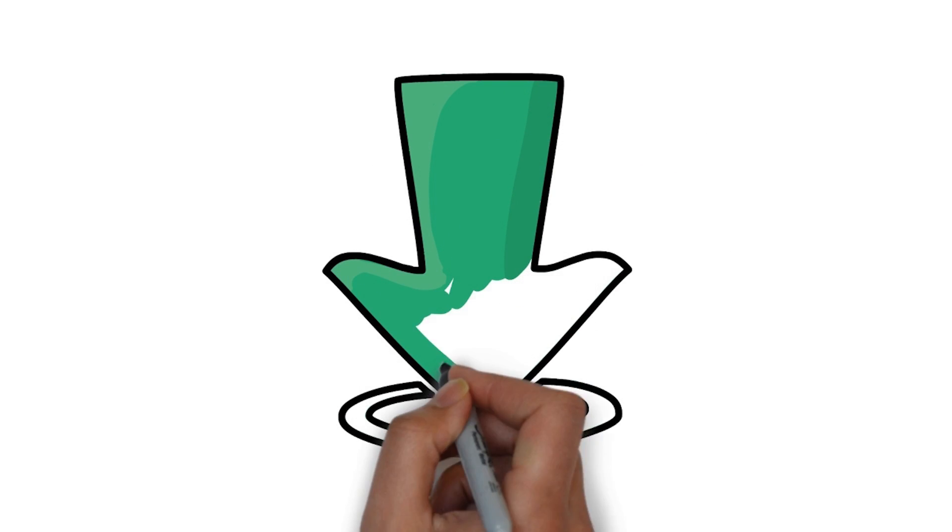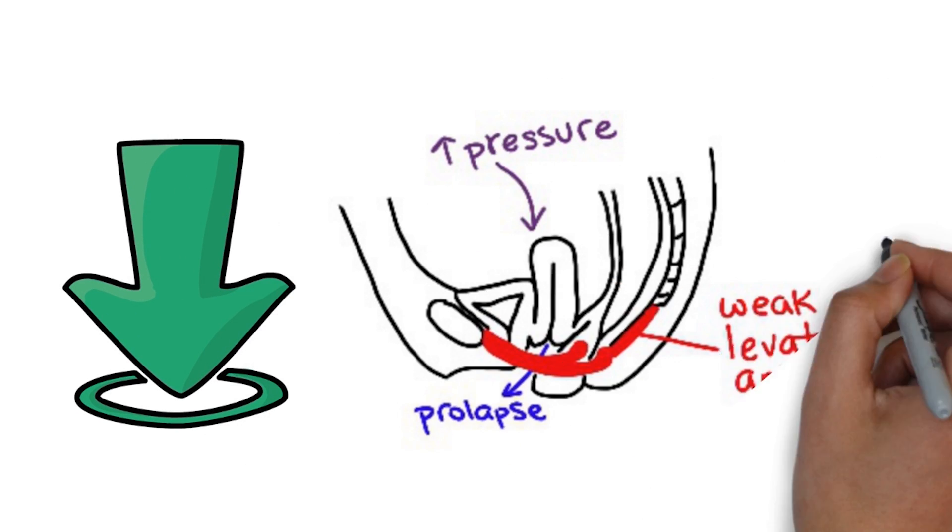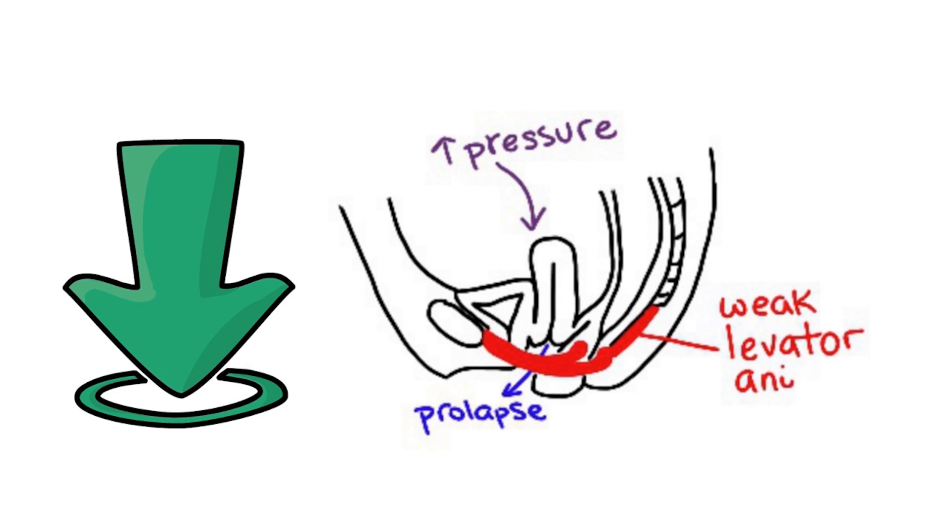So how does prolapse occur when levator ani muscles lose their tone? With increase in intra-abdominal pressure, vagina drops from a horizontal to a semi-vertical position, genital hiatus widens and opens, and this allows for herniation of pelvic organs.